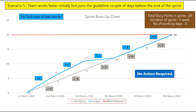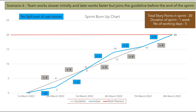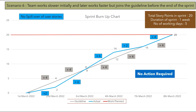In another scenario, the team works slower initially and later works faster, but joins the guideline before the end of the sprint. On days one and two, the actual line is below the guideline — the team is working slower. On days three and four, the actual line is above the guideline — the team is working faster. By the end of day four the team joins the guideline, and on the last day the team burns up 4 story points, completing all 20. No action is required in this scenario.